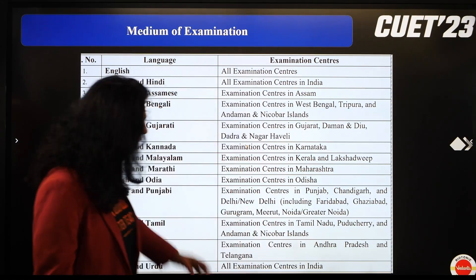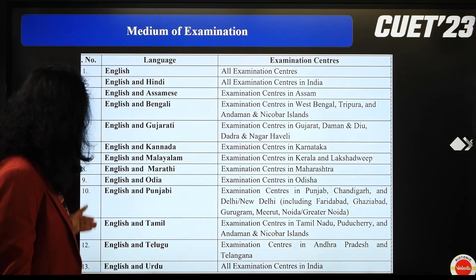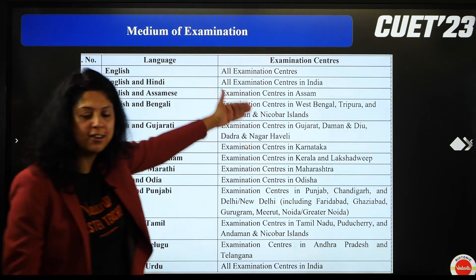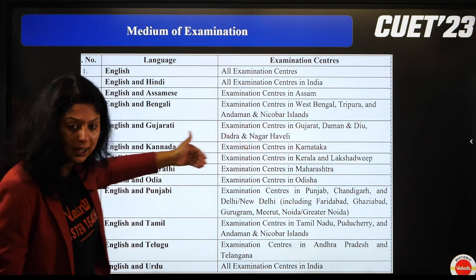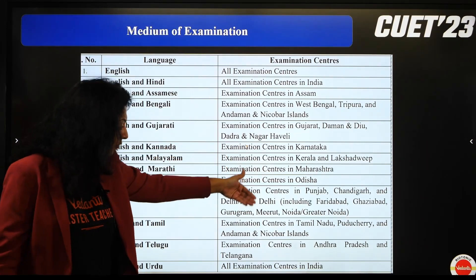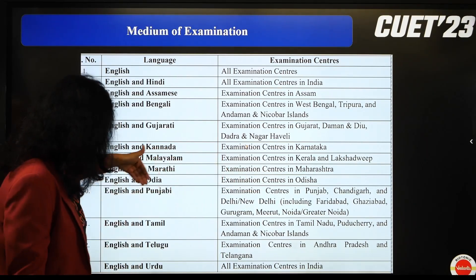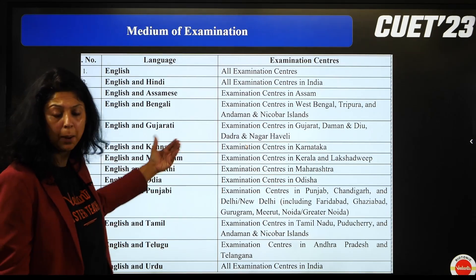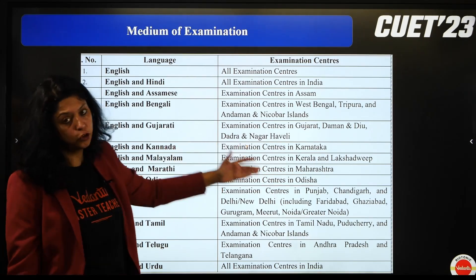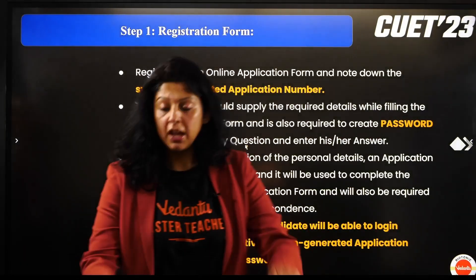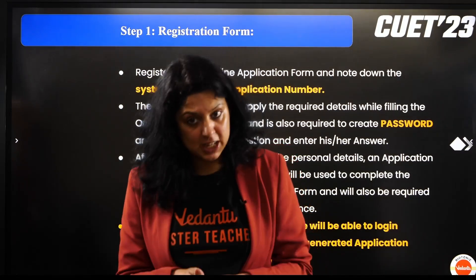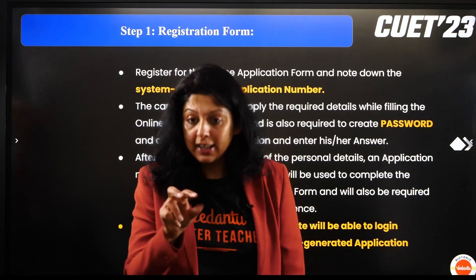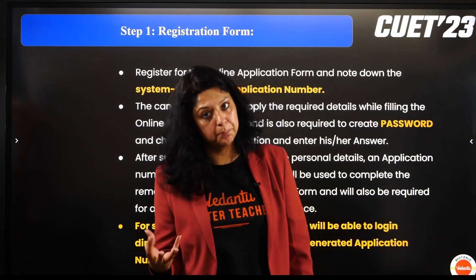इन्होंने हर एक language के examination centers उन state में रखे हैं। अगर आप Telugu में exam लिखना चाहते हैं तो Andhra Pradesh में, Tamil में लिखना चाहते हैं तो Tamil Nadu या Pondicherry में, और Kerala में लिखना चाहते हैं तो Karnataka के centers में मिल जाएगा। तो फटाफट CUET वाली website पे जाएं और वहाँ अपना application number generate करना शुरू करें।